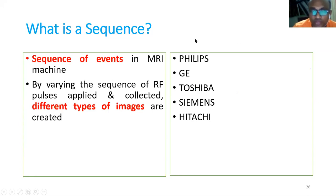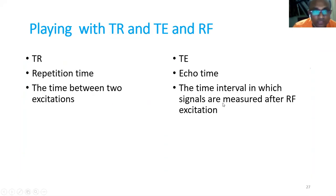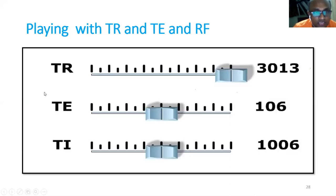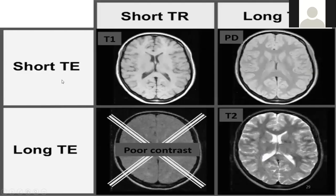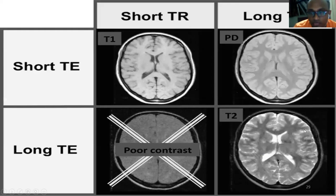TR is the repetition time, the time between two excitations. TE is the echo time, the time interval in which signals are measured after the RF excitation. By adjusting TR, TE, and TI, you can generate various sequences. Short TE and short TR gives you T1 sequence. Long TE and long TR gives you T2 sequence. These parameters are set by the radiologist.